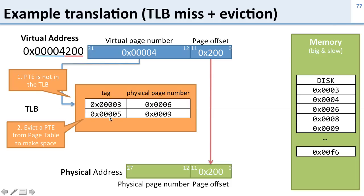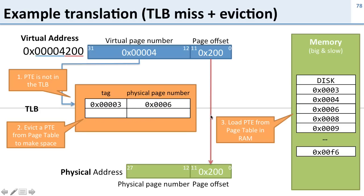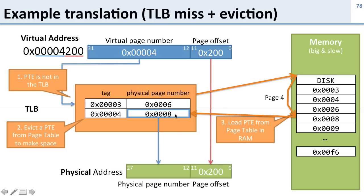Our TLB is full, so we're going to have to figure out which entry to kick out. We're going to evict the one we used least recently — LRU eviction. We just used this entry, so we'll kick out the other one. We go over to the page table, we're looking for virtual page number 4, so we walk down to virtual page number 4, find the translation, bring it over, install it, and use it to do our translation.